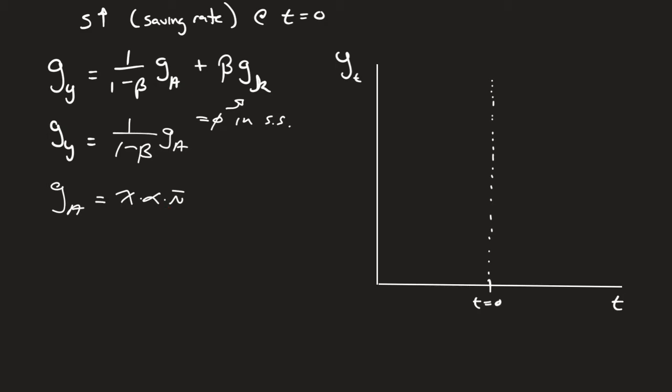So we can start saying before this change, we were at steady state. So we had this constant level. Let's say this is 1 over 1 minus beta times the growth rate of a. If there was no change, we would just continue on this balanced growth path forever. But we do see a change. We see the change in savings rate.